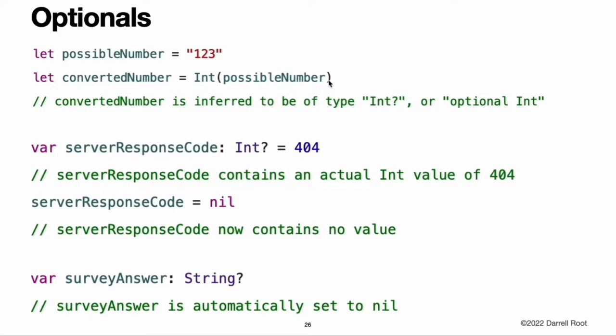An optional Int is written as Int question mark, not Int. The question mark indicates that the value it contains is optional, meaning that it might contain some Int value, or it might contain no value at all. It cannot contain anything else, such as a Bool value or a String value. It is either an Int or it is nothing at all.